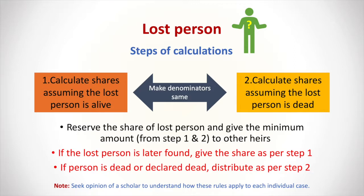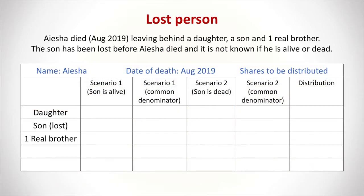Let's solve a practice case. Aisha died in August 2019, leaving behind a daughter, a son, and one real brother. The son has been lost before Aisha's death and it is not known if he is still alive or dead. We write the list of relatives in the left column: daughter, son (lost), and one real brother. We calculate this in two scenarios: scenario one, if the son is alive; and scenario two, if the son is dead.